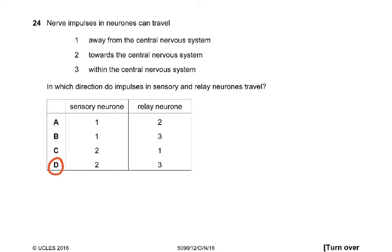Question 24: nerve impulses in neurons can travel away from the central nervous system, towards the central nervous system, and within the central nervous system. In which direction do impulses in sensory and relay neurons travel? In sensory neurons they travel towards the central nervous system, and in relay neurons they travel within the central nervous system. That is why the answer was D — you need to understand sensory, relay, and motor neurons.